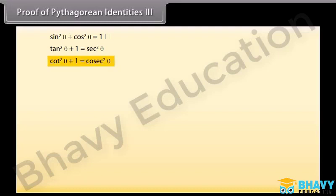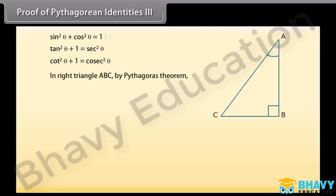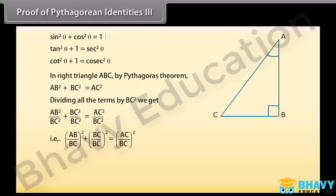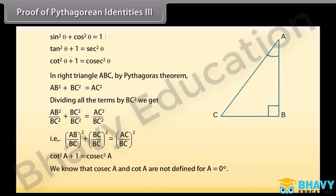Proof of Pythagorean identity 3. The last identity is cot squared theta plus 1 is equal to csc squared theta. To prove this, we again take right triangle ABC. By the Pythagorean theorem, AB squared plus BC squared is equal to AC squared. Dividing all terms by BC squared, we write it as (AB/BC)² + (BC/BC)² = (AC/BC)², that is cot squared A plus 1 is equal to csc squared A. Since cos A and cot A are not defined for A equal to 0°, this is true for all A such that 0° < A ≤ 90°.